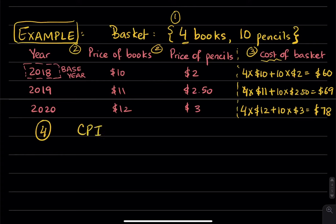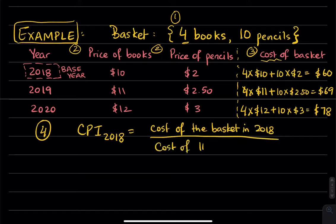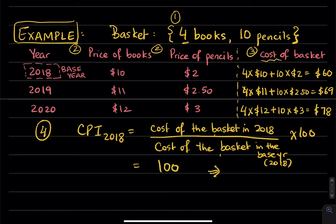So, let's take a look at the CPI in 2018. The CPI in 2018 will be the cost of the basket in 2018, divided by the cost of the basket in the base year, which is also 2018. That's what's given to us, times 100. So, notice the numerator and denominator will cancel out, and you're going to be left with a value of 100, which tells us that the CPI is always 100 in the base year.